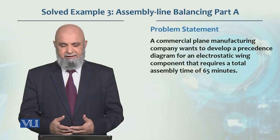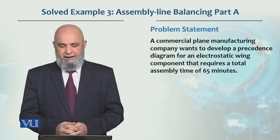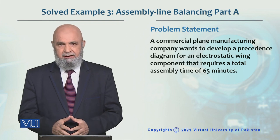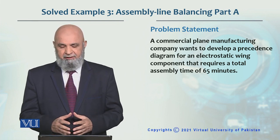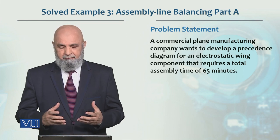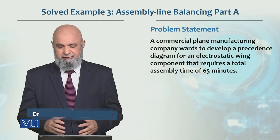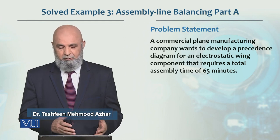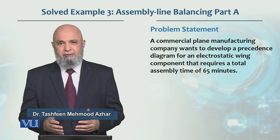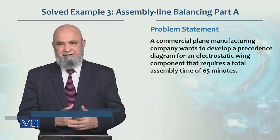Let's look at an example of assembly line balancing. Suppose a commercial plane manufacturing company, which presents a precedence diagram for one of its components — the electrostatic wing component. This requires that the total assembly of all tasks is 65 minutes.